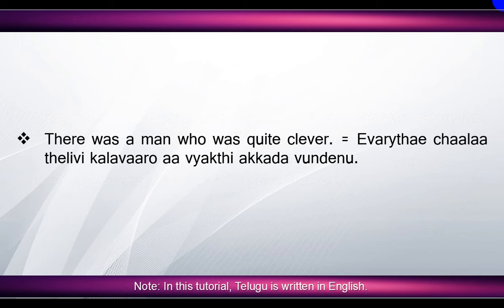'There was a man who was quite clever' means 'yavarai te chala teluvi kalavaro aa vyekthi akkadu undenu'. Here, 'there' means 'akkada', 'was' means 'undenu', 'man' means 'vyekthi' — actually man means 'manishi' but here you can say 'vyekthi', which means 'person'. 'Who was quite clever' means 'yavarai te chala teluvi kalavaro'. 'Quiet' means 'chala', 'clever' means 'teluvi kalavaro'.